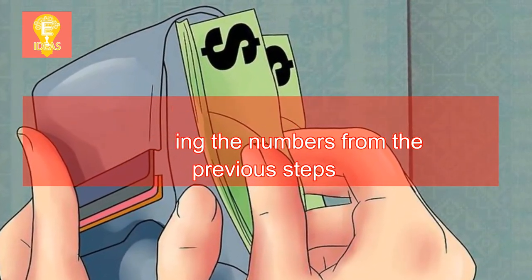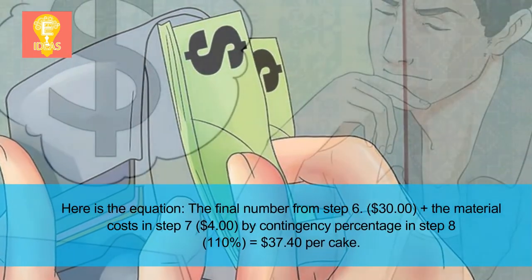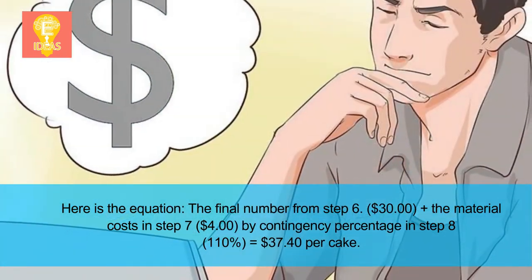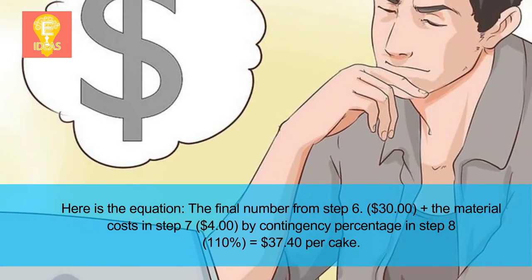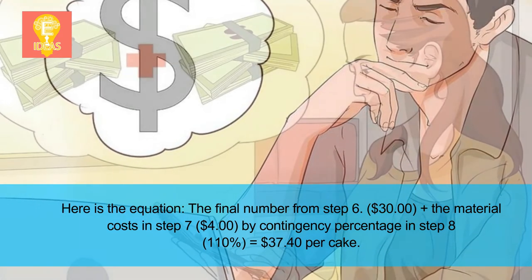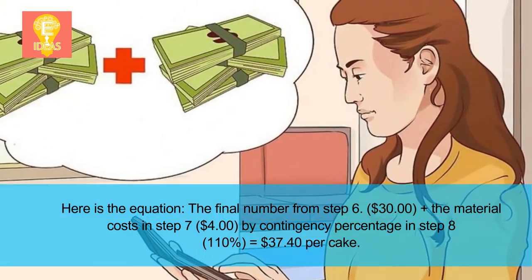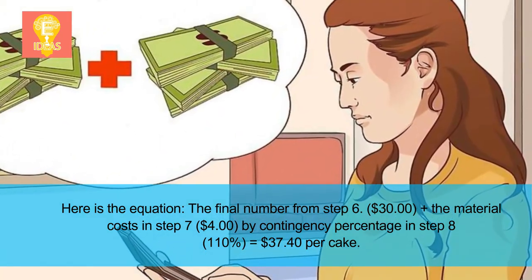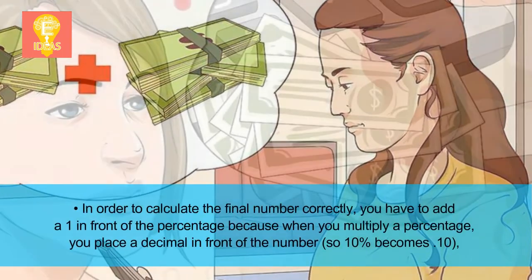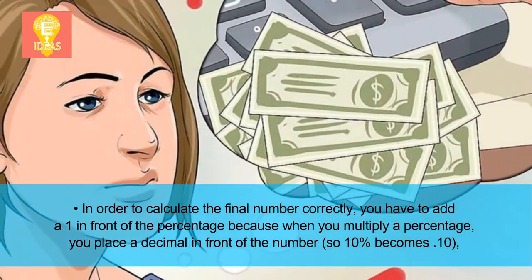Step 9: Accurately calculate your final product cost using the numbers from previous steps. The equation is: the final number from step 6 (thirty dollars) plus the material costs from step 7 (four dollars), multiplied by the contingency percentage from step 8 (one hundred ten percent), equals thirty-seven dollars and forty cents per cake.